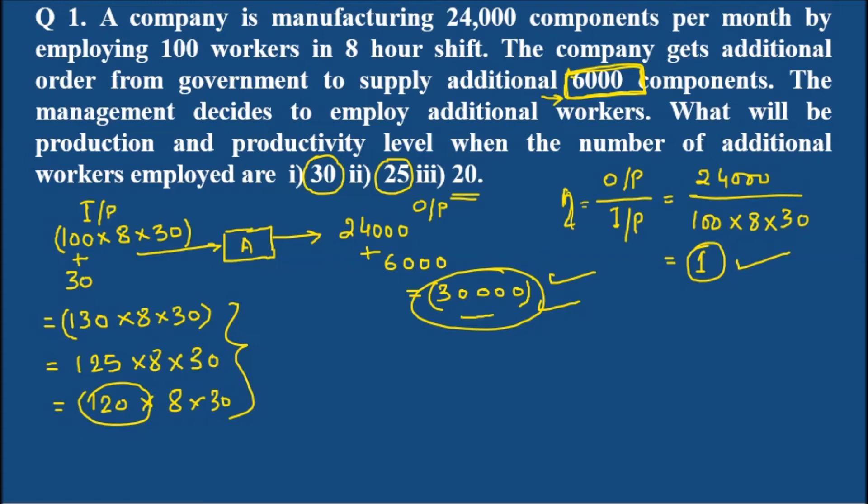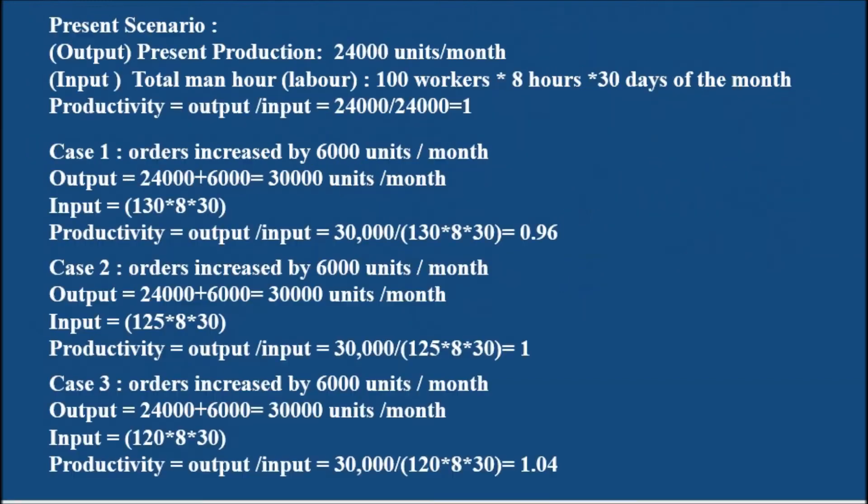This is the production in all three cases. Whereas if you divide output by input you will be getting the productivity levels. Now to sum up, I have already solved it here. You can do your calculations. In the first case, the productivity is 0.96, that is 96% in terms of percentage. And then one which shows that it is 100% and it is 104% in terms of percentage.